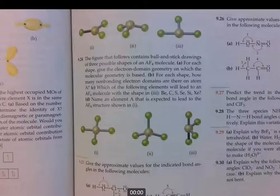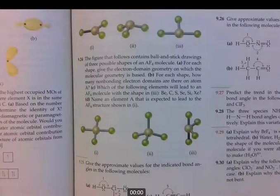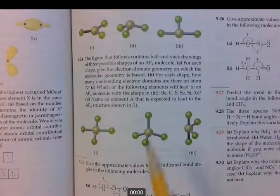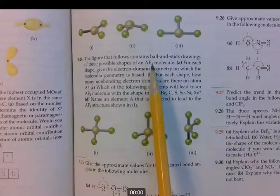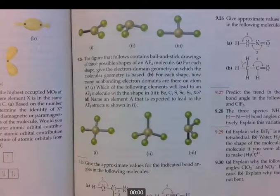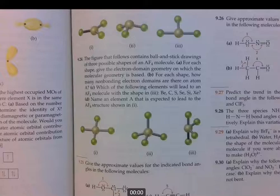We're continuing now with the day 62 assignment called hybridization, although it's really more on VSEPR. We're now on problem 9-24 which is on page 385 in your textbook.